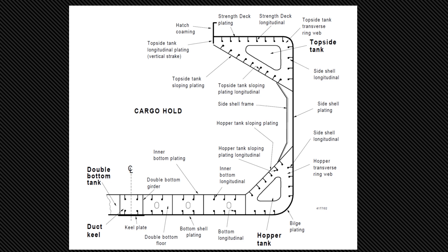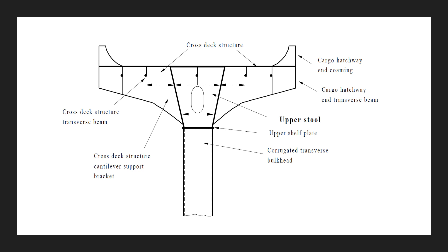This plating is supported by secondary stiffening members such as frames and longitudinals. These secondary members transfer the load to primary structural members such as the double bottom floors and girders, or the transverse web frames in top side and hopper tanks. The hopper tanks, top side tanks, and double bottoms transfer load from secondary structural members to primary structural members. The transverse bulkhead structures, including their upper and lower stools together with the cross deck and double bottom structures, are the main structural members.